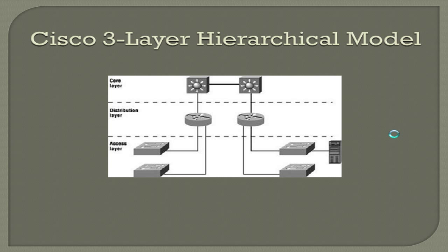This is Cisco's three-layer hierarchical model for building networks. Starting from the bottom, you have the access layer, which uses simpler switches where all individual PCs connect. Above that is the distribution layer, where all the individual access switches connect. At the top is the core layer, which handles higher-level functions. This model is really meant for larger networks — like a campus network or a big headquarters — where the core and distribution layers might be compressed into one in smaller environments.